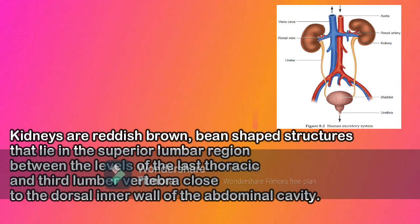The right kidney is placed slightly lower than the left kidney. Each kidney weighs an average of 120 to 170 grams. The outer layer of the kidney is covered by three layers of supportive tissues, namely renal fascia, pararenal fat capsule, and fibrous capsule.